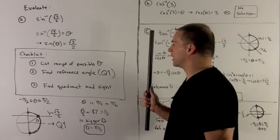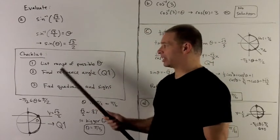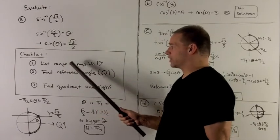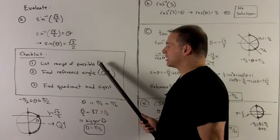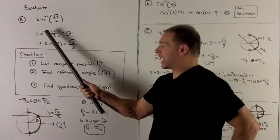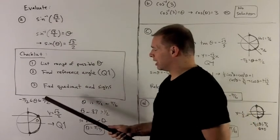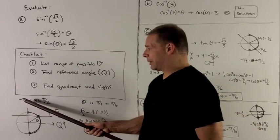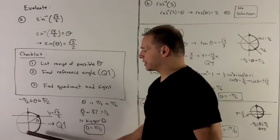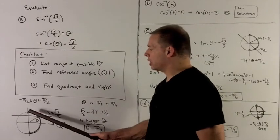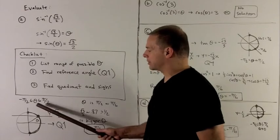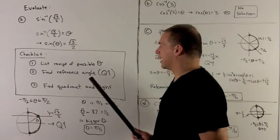Let's note a few things — there's a checklist. The first thing I want to do is list the range of possible thetas that are going to go with my inverse trig function. For sine inverse, this is going to be between minus pi halves and pi halves. So I draw myself a unit circle, and I'll just darken the arc going from minus pi halves to pi halves.